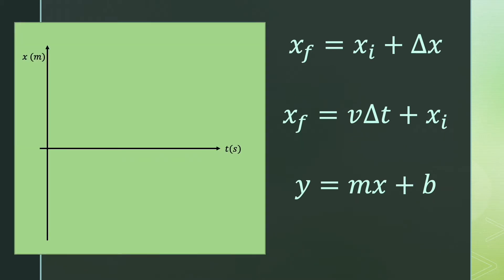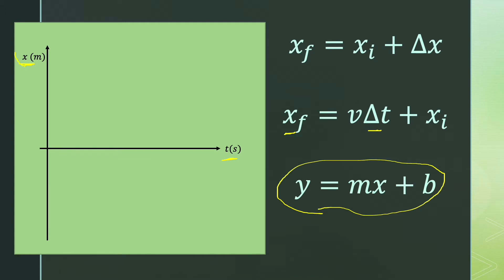If I take a graph and plot position on the vertical axis and time on the x-axis, it will be in slope-intercept form. Don't get confused by the axes — we are graphing position, which uses the letter x, on the vertical axis. In physics, the horizontal axis is usually time, and the vertical axis is what you're graphing as a function of time.